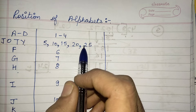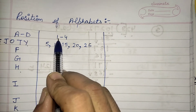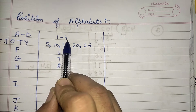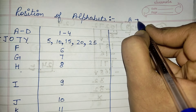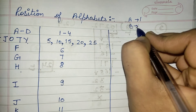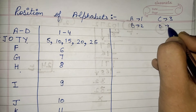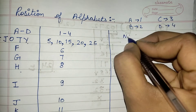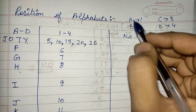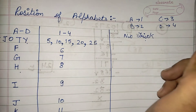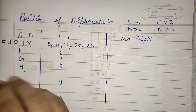Everyone knows the position from A to D: A is at first position, B is at second position, C is at third, and D is at fourth position. So I think no trick is required here because everyone already knows the position value of A, B, C, and D. Let's talk about the other values now.